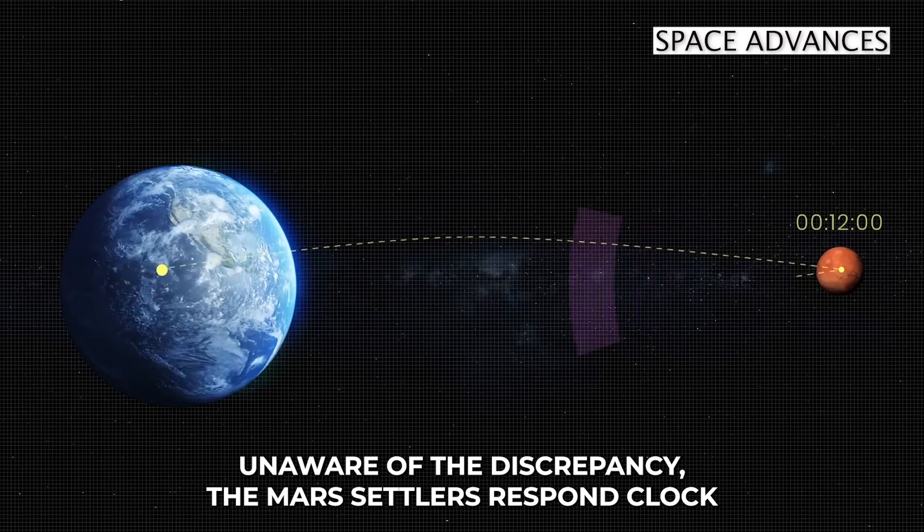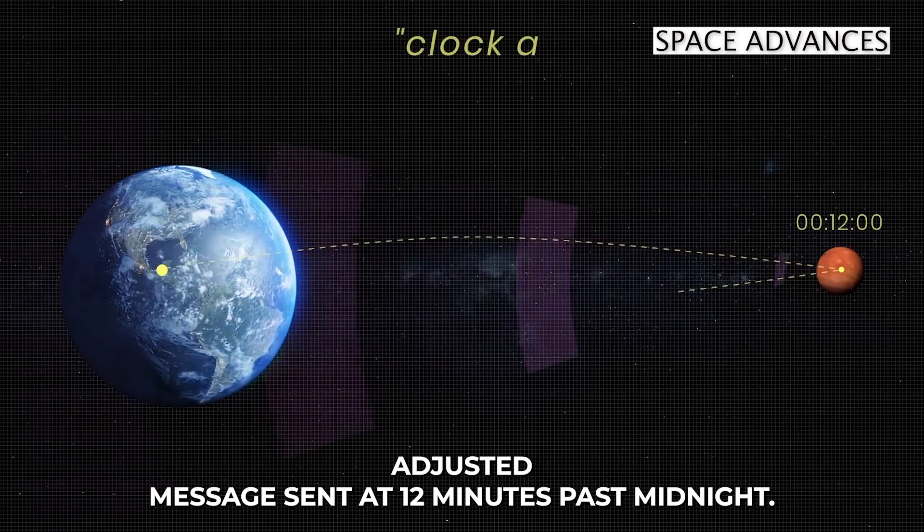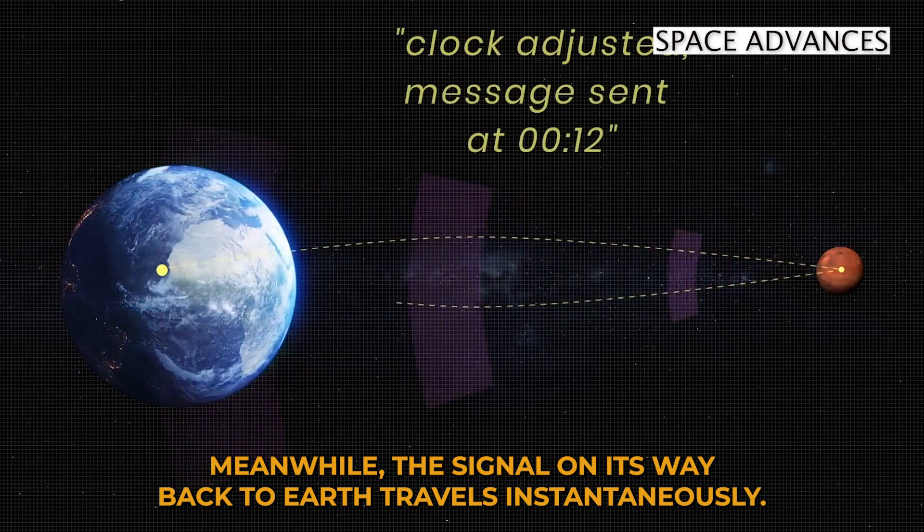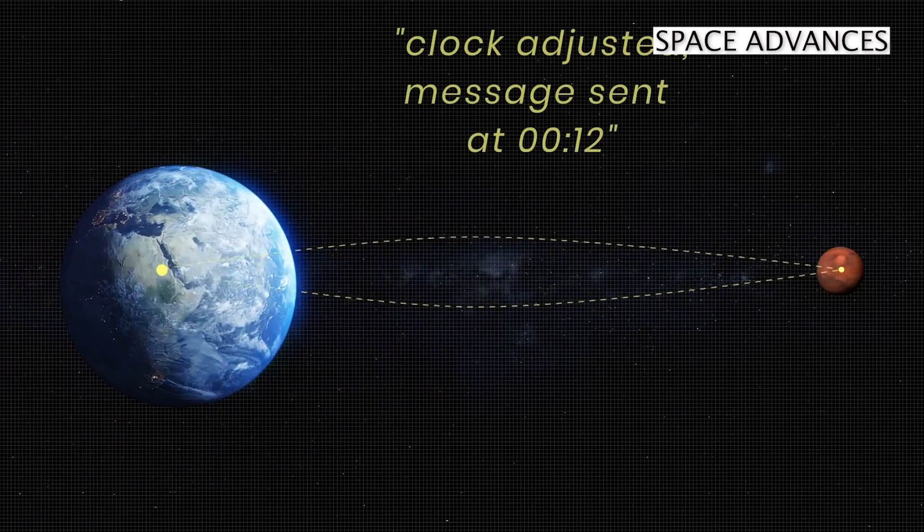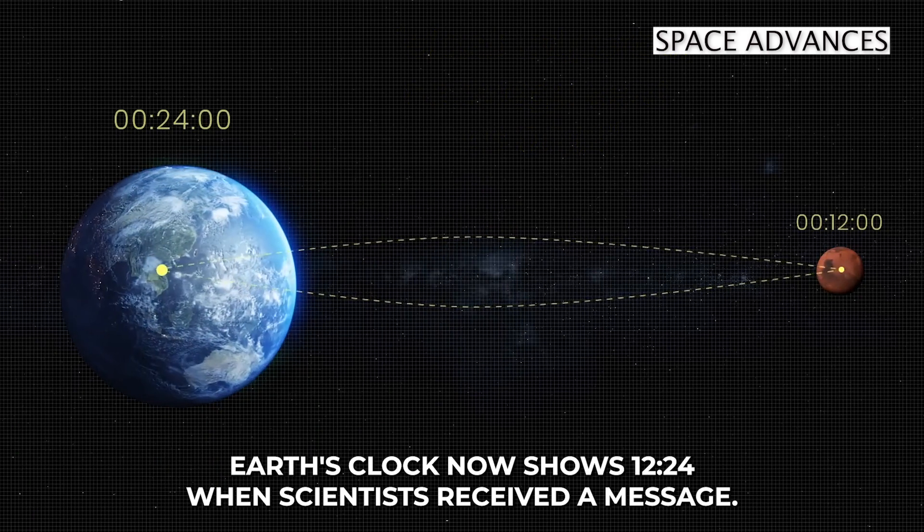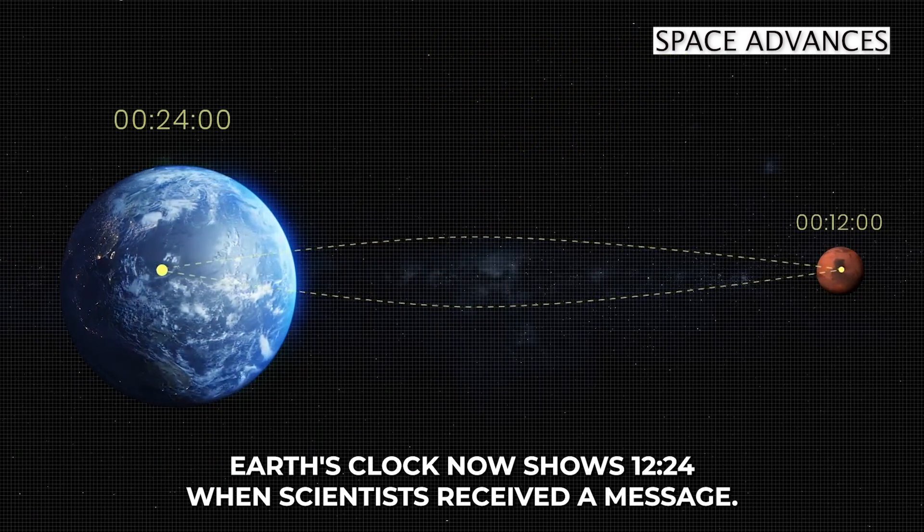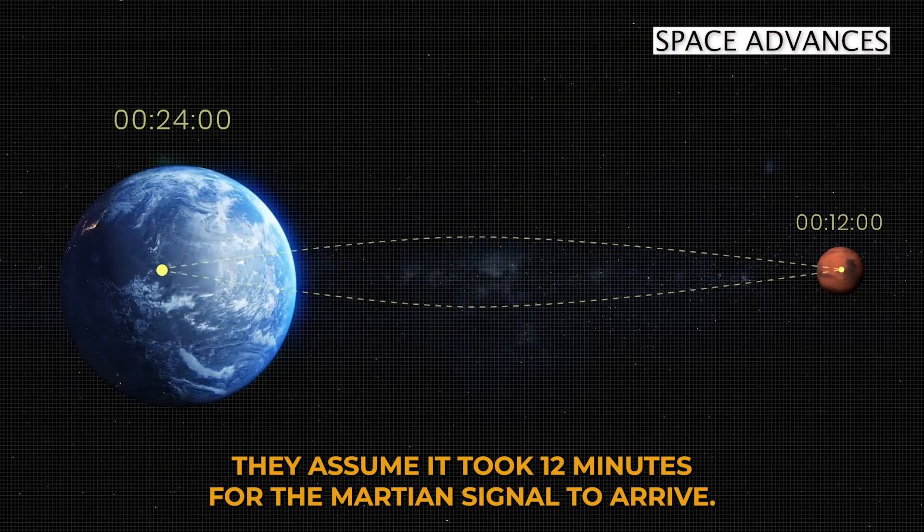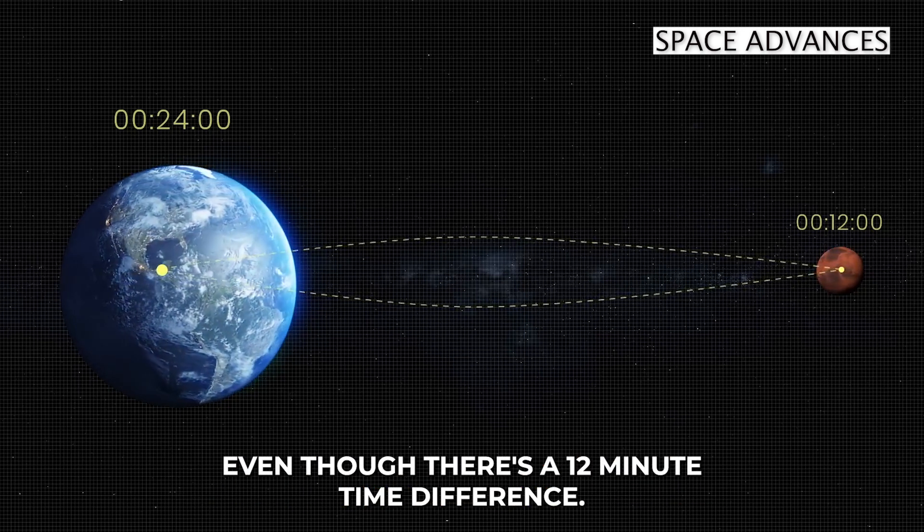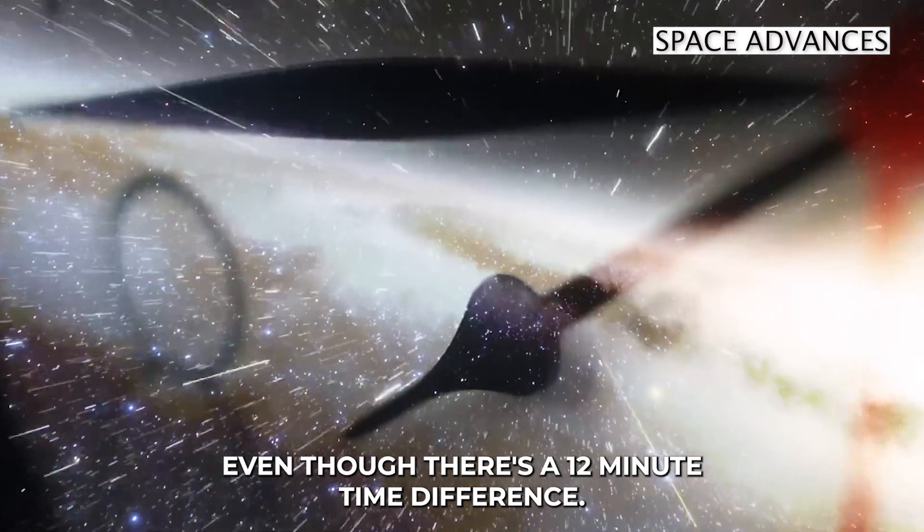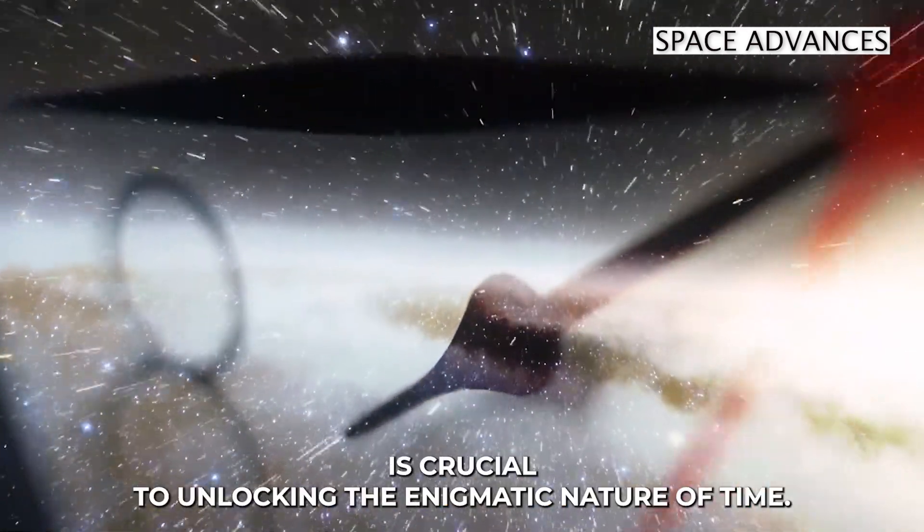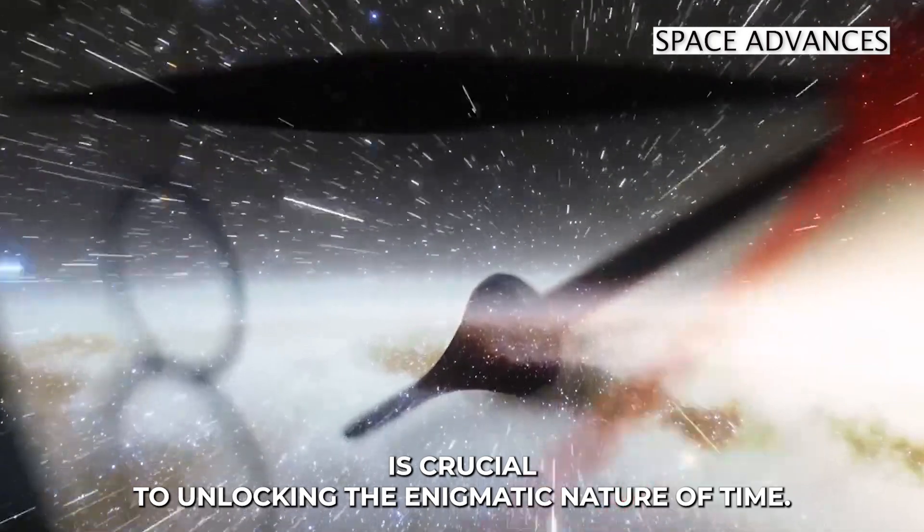Unaware of the discrepancy, the Mars settlers respond, clock adjusted, message sent at 12 minutes past midnight. Meanwhile, the signal, on its way back to Earth, travels instantaneously. Earth's clock now shows 24 minutes past 12, when scientists receive the message. They assume it took 12 minutes for the Martian signal to arrive, so they think everything went well, even though there's a 12-minute time difference. So you can see by this example that understanding the speed of light is crucial to unlocking the enigmatic nature of time.